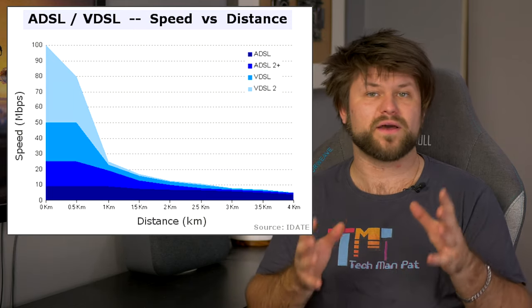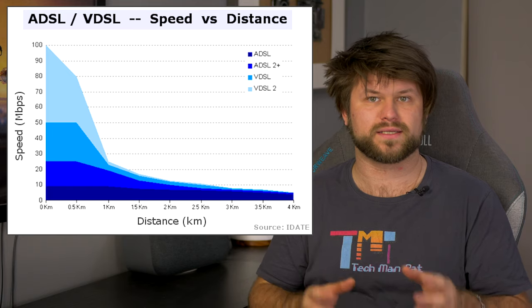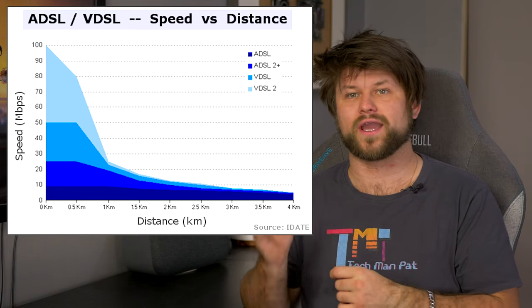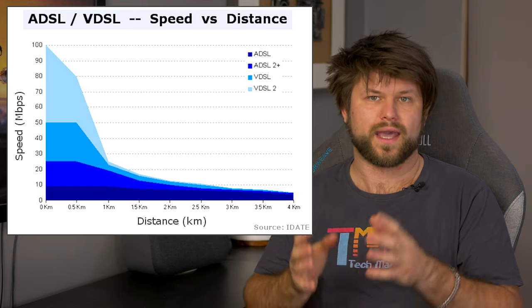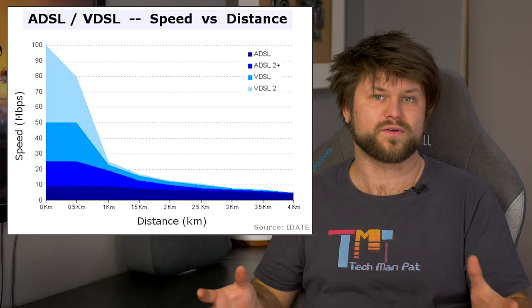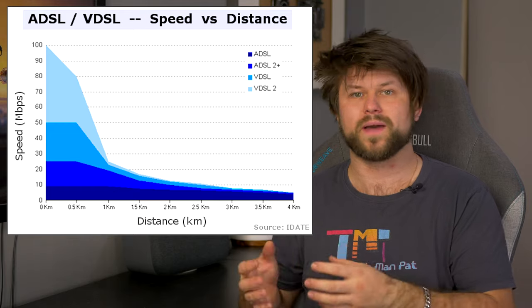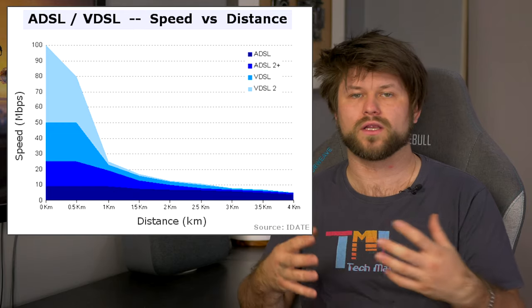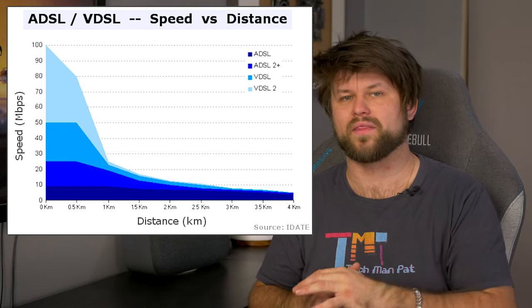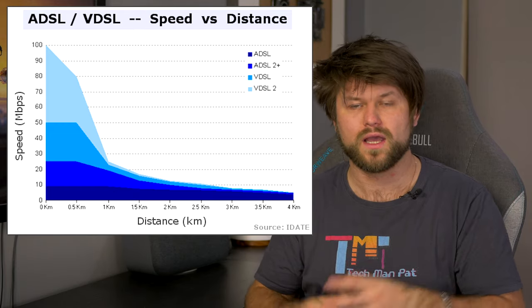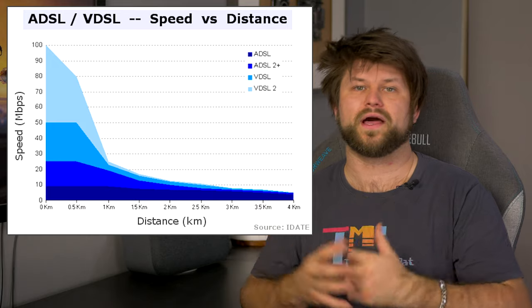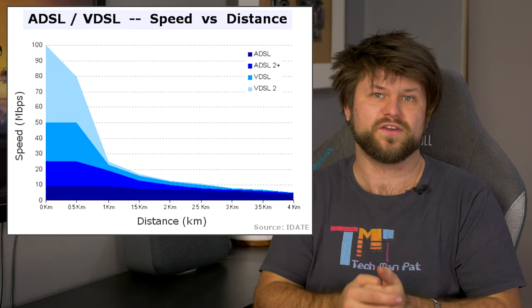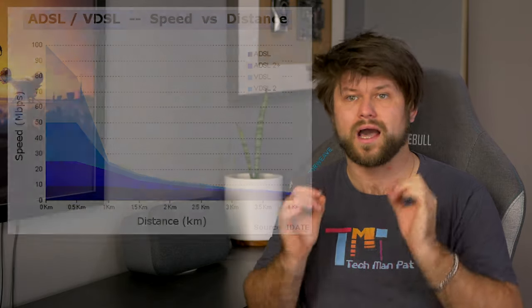The maximum available bit rate is achieved at a range of about 300 meters, and performance degrades as the local loop attenuation increases. Basically, no copper line on VDSL2 should be higher than 300 meters.